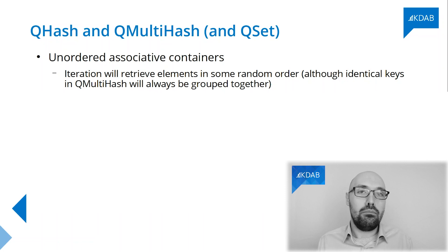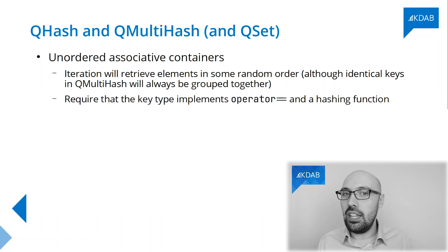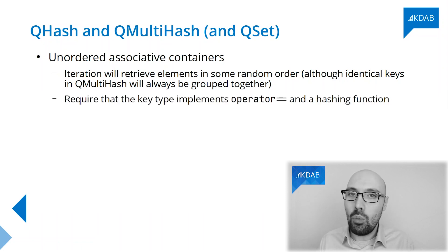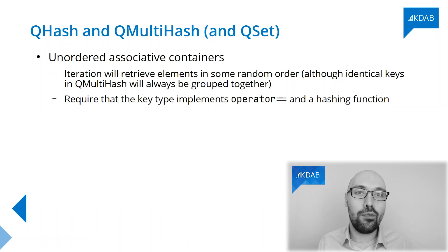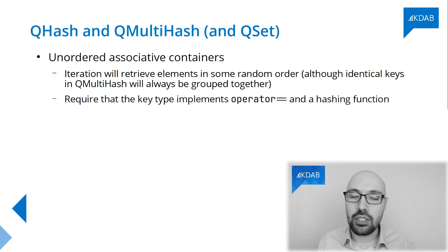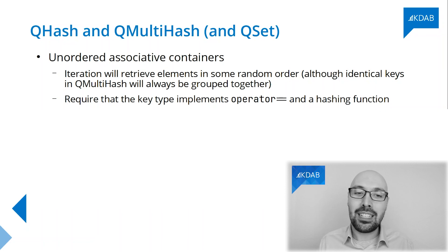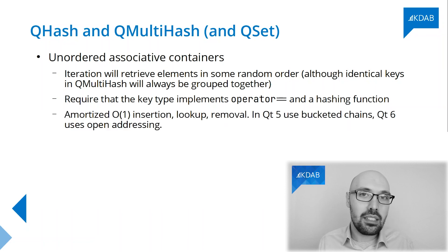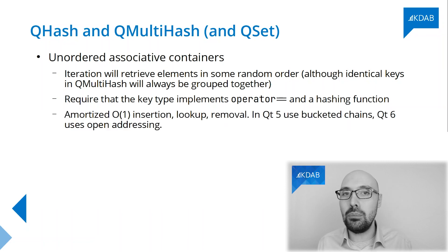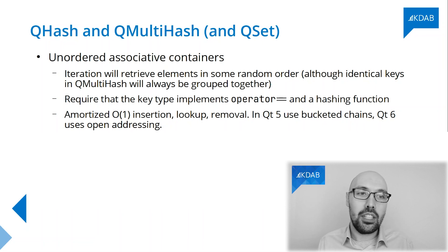What's the trade-off? You're giving away the ordering — what are you getting back? You're getting back, in general, faster operations on these data structures: pretty much amortized constant time insertion, lookup, and removal inside a QHash, QMultiHash, or a QSet.